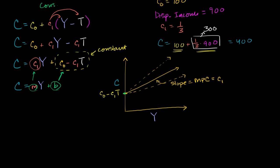In the last video where we generalized the linear consumption function, I said that the total amount of taxes — the aggregate taxes — are constant. All of these were constants right here, so you can kind of merge them into a constant that ended up being our independent variable intercept right over here.